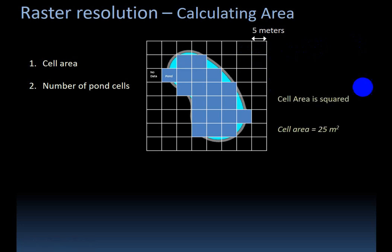Okay, so we know that we can get the area of a single cell by squaring the resolution. So we can multiply 5 meters the length by 5 meters the height to get the area of one cell. In this case, it would be 25 meters squared. We're squaring both the value and the units.